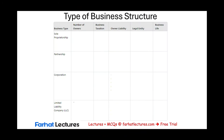Let's start by looking at the sole proprietorship, beginning with the number of owners. The word sole means one — we only have one owner. The advantage of a sole proprietorship is that it's easy to establish; you don't need any government involvement, you just start a business. From a business taxation standpoint, the business doesn't exist by itself and doesn't pay taxes separately. The owner pays the taxes — there is no separate business income tax because the owner themselves are the business.